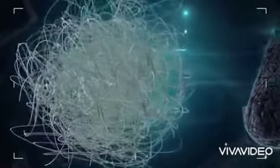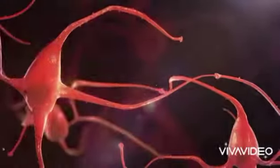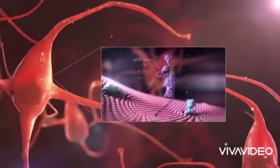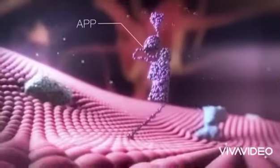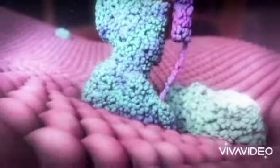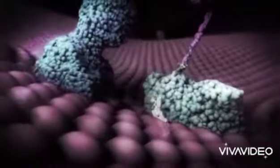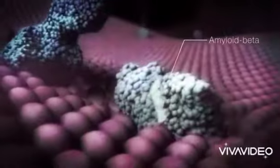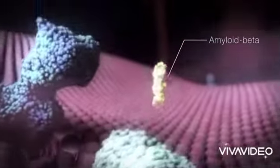How are senile plaques formed? On the surface of the neuron is a large protein called APP. Normally, APP is cleaved by enzymes on the surface of a neuron and it frees a protein called amyloid beta. The amyloid beta protein is then cleared in the body.